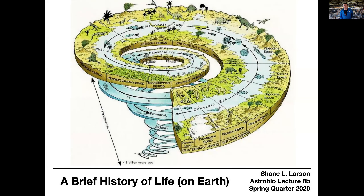This is a very famous style of picture called the geologic spiral. It starts with the formation of the Earth way down at the bottom and spirals up over the eons of time until you get to the present day. You can see the various names for the geologic eras labeled as you go along. It's useful to see because you can see where they've marked much of the life forms that appear in the fossil record of Earth's history. Almost all of it is concentrated very recently in the last billion years or so.